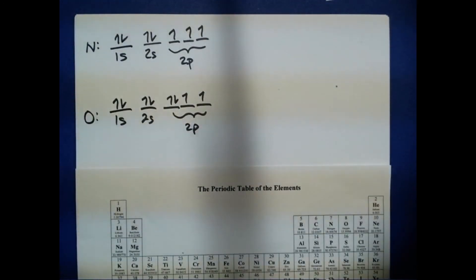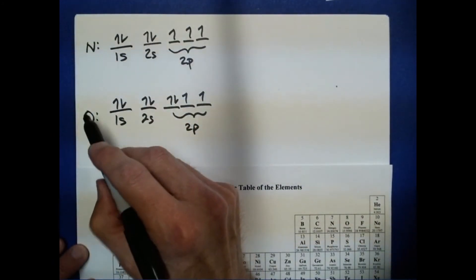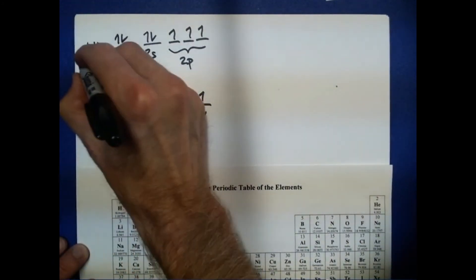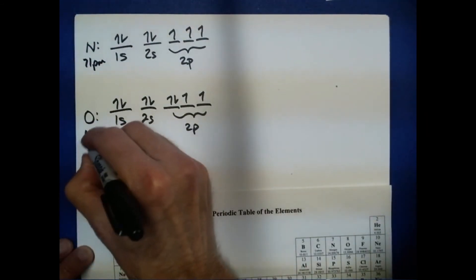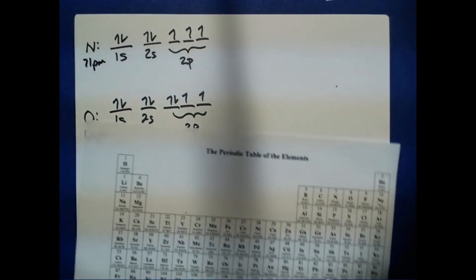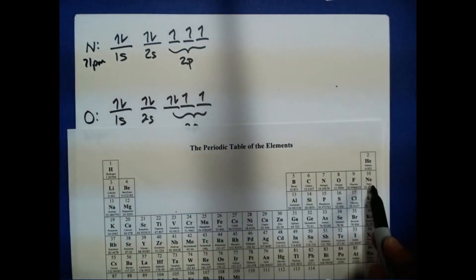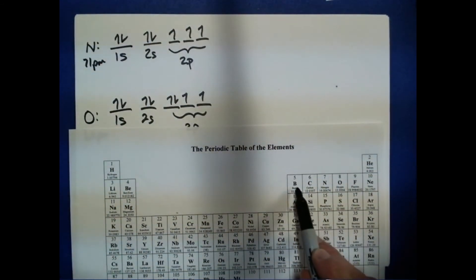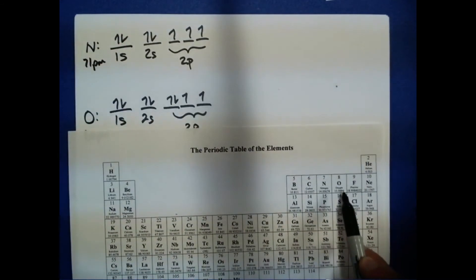The sizes of the nitrogen and oxygen atoms are 71 picometers for nitrogen and 66 picometers for oxygen, which we'd expect because, as we move across the periodic table, we see shrinkage in atomic size due to increasing effective nuclear charge.